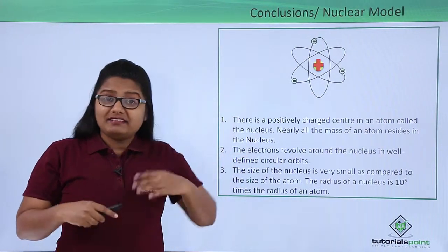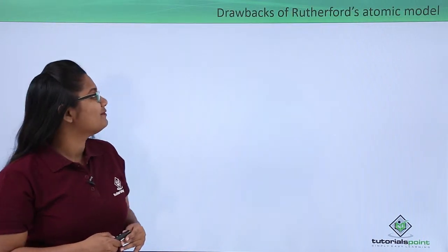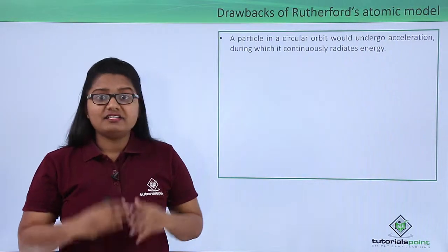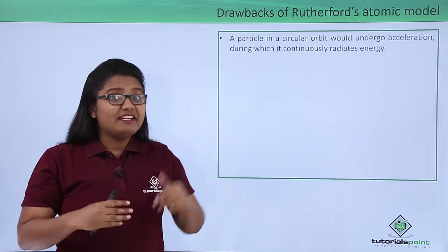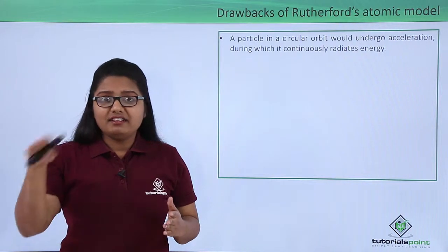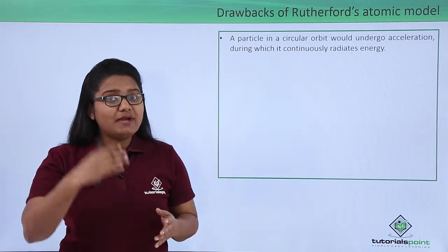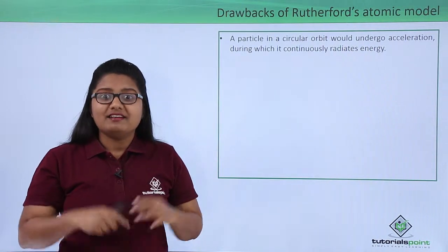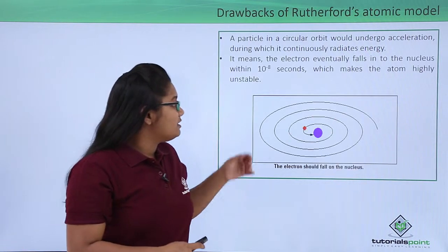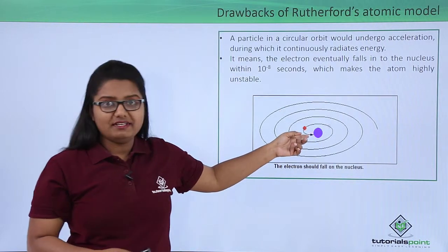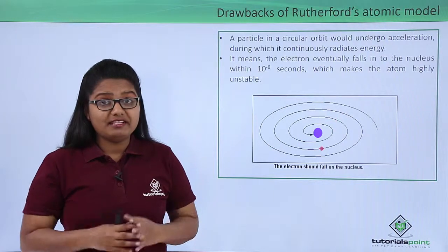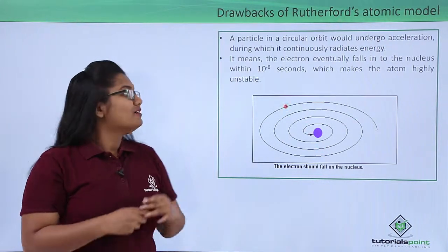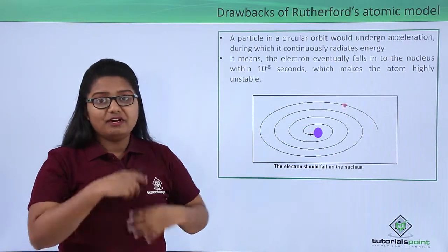However, this model had an important drawback. Whenever a body undergoes circular motion it always accelerates, and acceleration is accompanied by energy loss. The electron continuously moving around the nucleus in a circular orbit accelerates and continuously radiates energy. This leads to the orbit shortening. The electron continuously loses energy, its orbit becomes smaller and smaller, and it eventually falls onto the nucleus. This states that an atom is highly unstable. But we know it is quite stable, otherwise we would not exist. This is an important drawback of Rutherford's atomic model because of which it was not accepted.